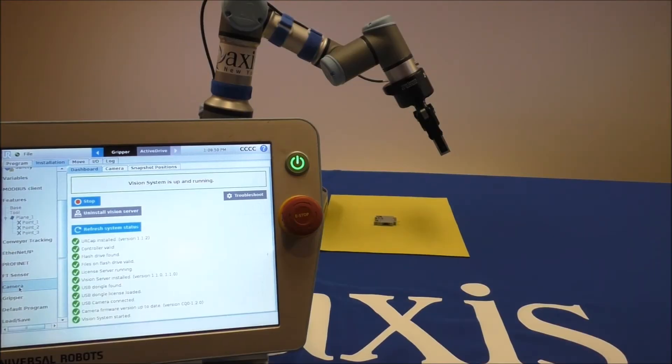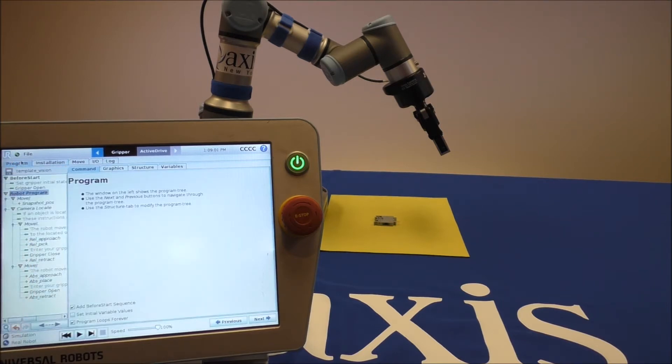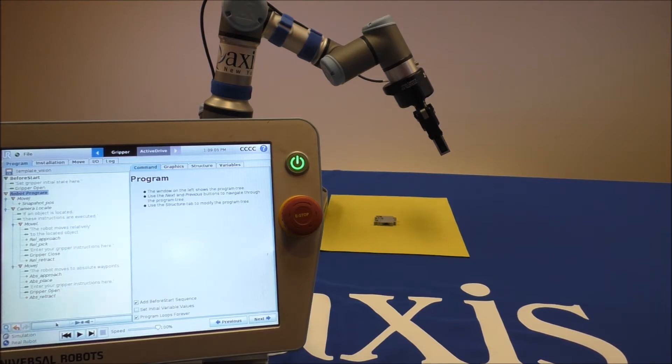This video is going to show how to program the wrist camera. This assumes that you have already installed the hardware as well as downloaded the URCap file. Downloading the URCap file will provide a template program from Roboteek. This template program is a good starting point for programming your first vision application using the wrist camera.